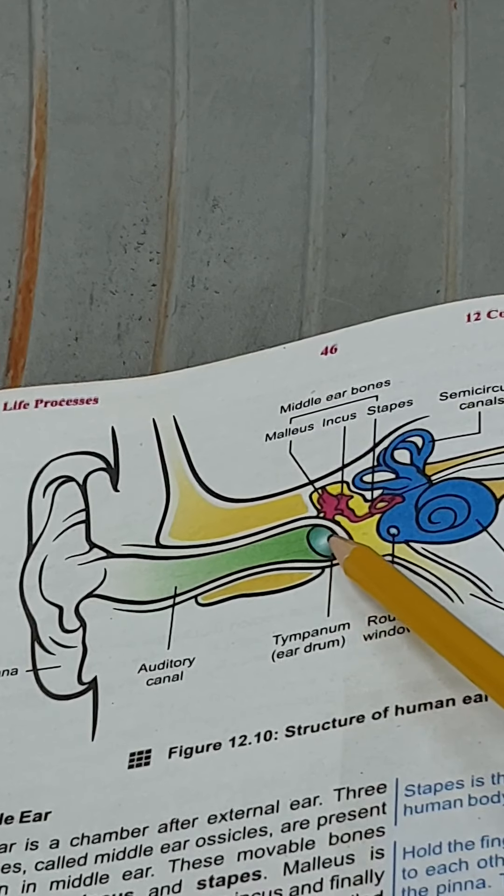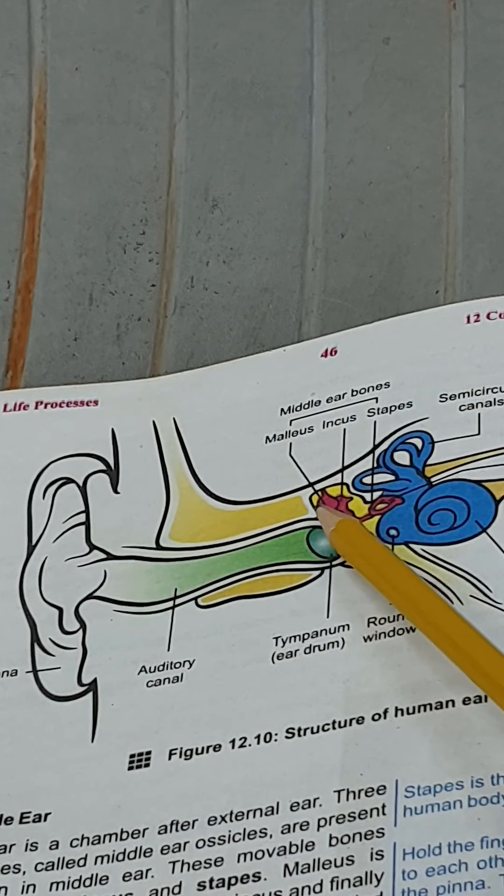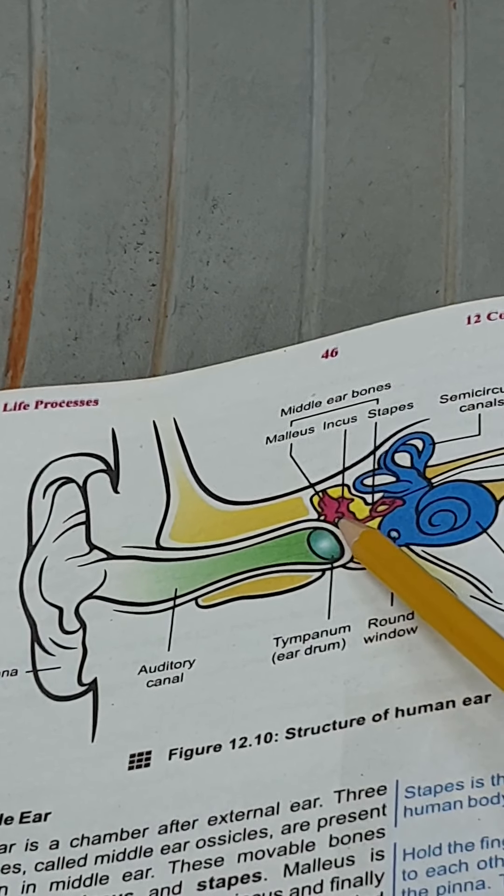This vibration is passed to the middle ear ossicles - first to the malleus, then incus, and then stapes.